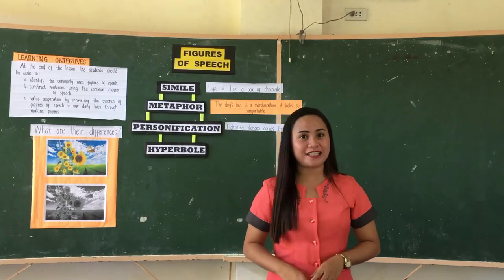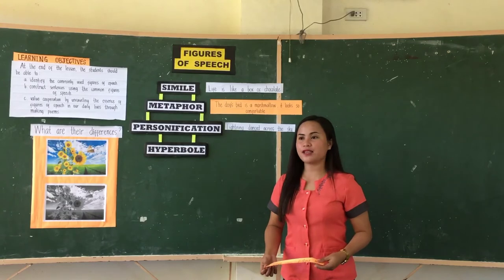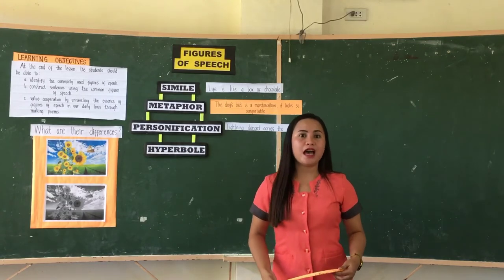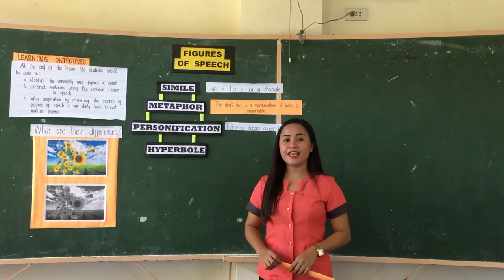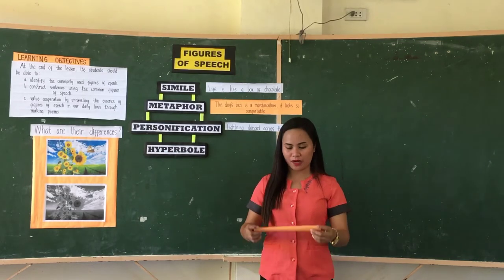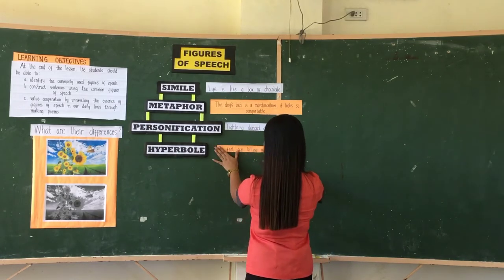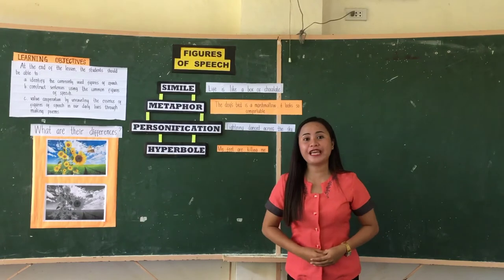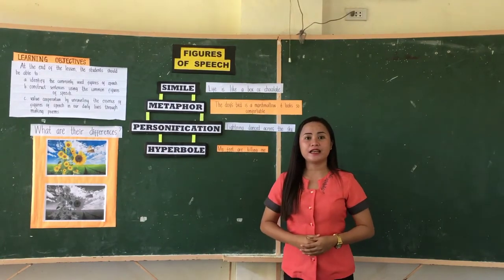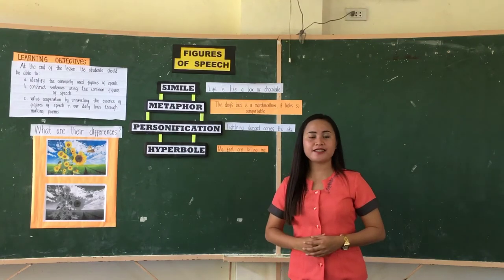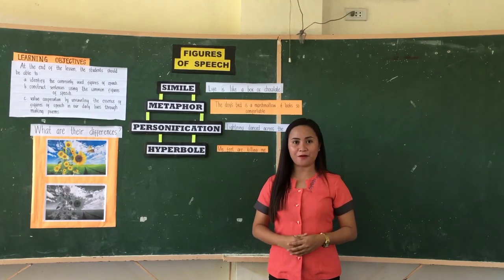So now let's proceed to the last one. We have here hyperbole. So what is hyperbole? A figure of speech that distorts facts and is meant to exaggerate. I have here an example: 'My feet are killing me.' We cannot say that feet can kill us. Instead, we may think that the feet is in pain right now.